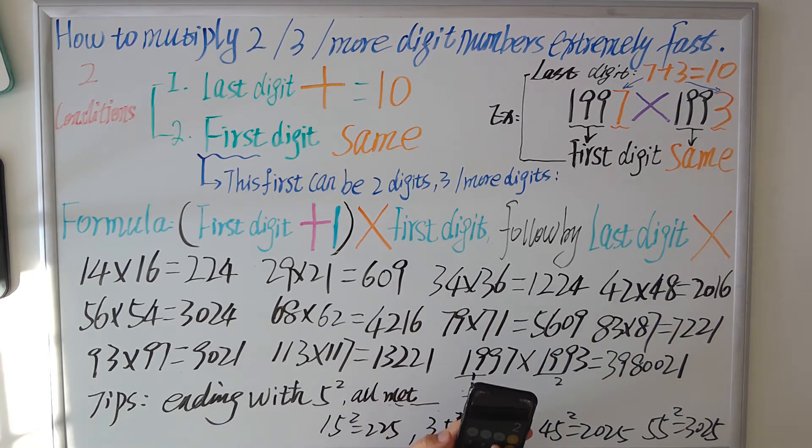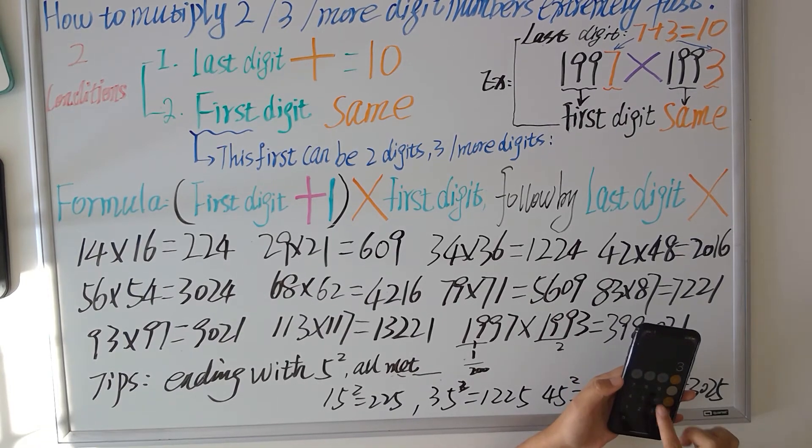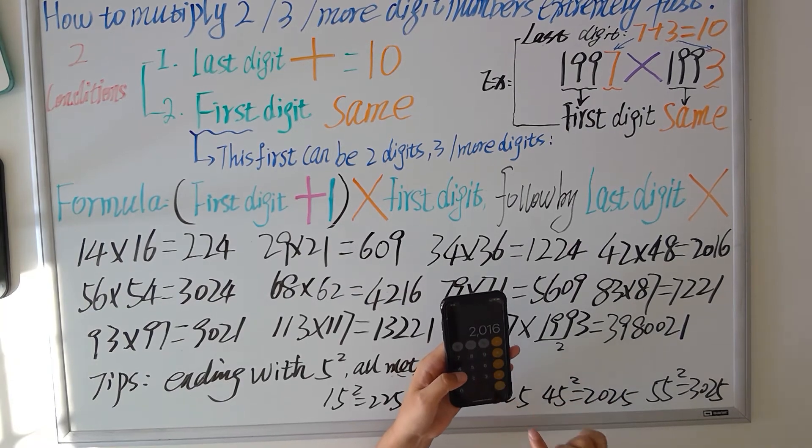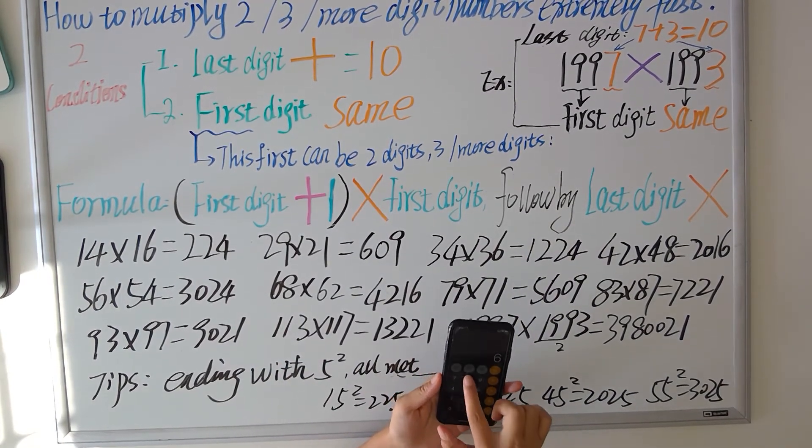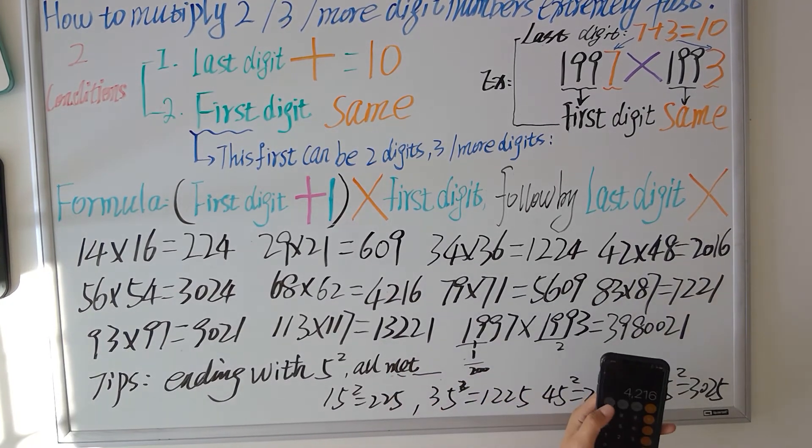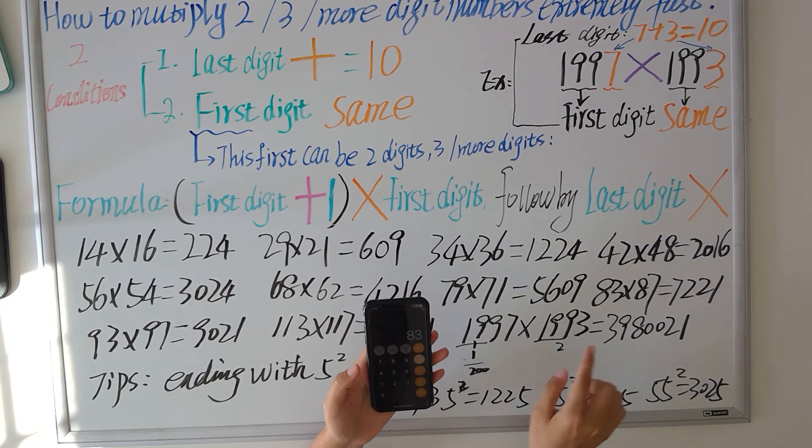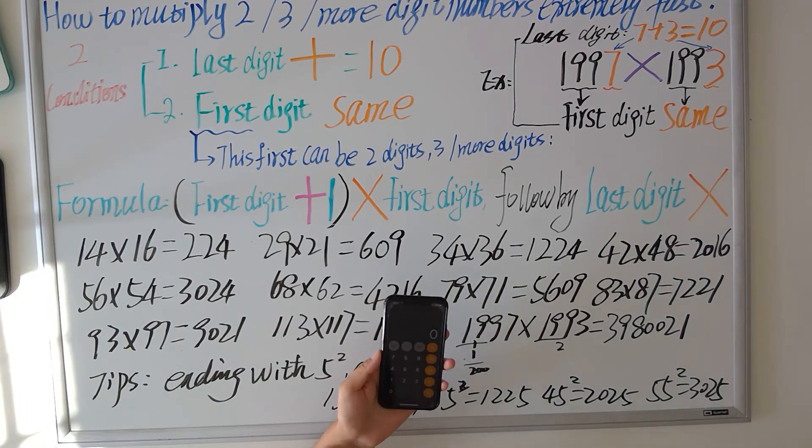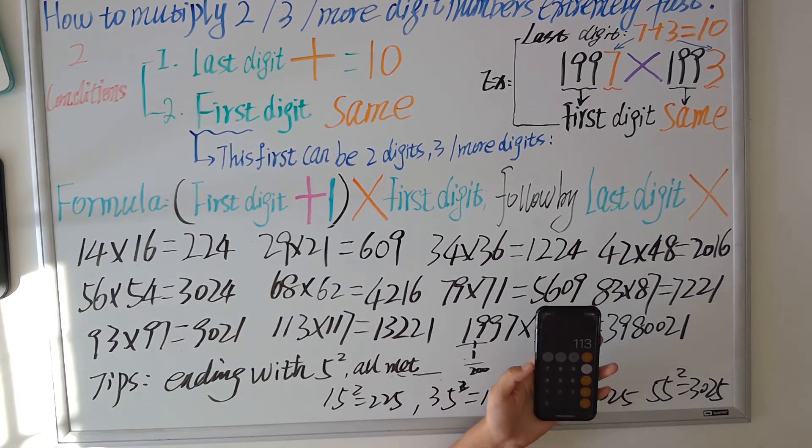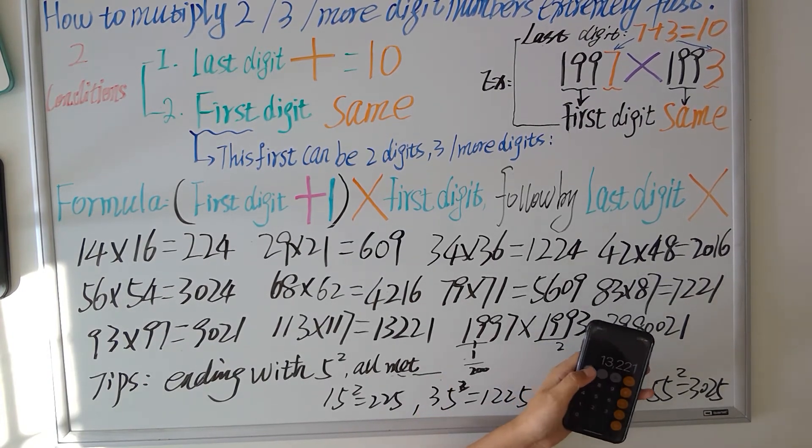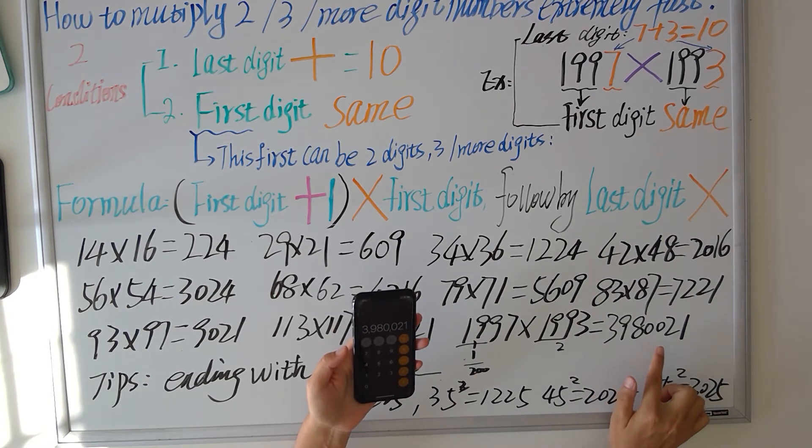14 × 16 = 224. 29 × 21 = 609. 34 × 36 = 1224. 42 × 48 = 2016. 56 × 54 = 3024. 68 × 62 = 4216. 79 × 71 = 5609. 83 × 87 = 7221. 93 × 97 = 9021. 37 × 33 = 1221. 1997 × 1993 = 3980021. We got all right numbers.